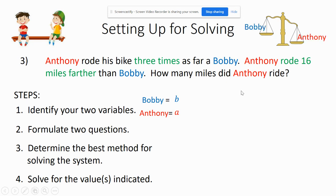Anthony rode further than Bobby, so that means basically Anthony rode three times as far, I needed to take three times. Anthony rode 16 miles further than Bobby, so I could add 16 to Bobby to get equal to Anthony rode.